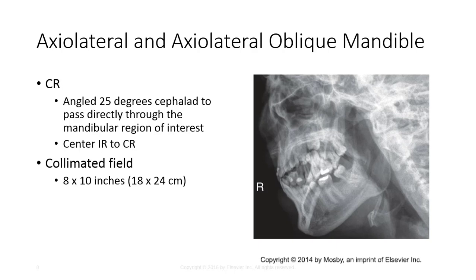The combination of tilt and tube angle should equal approximately 25 degrees. For example, if you tilt the head 10 degrees towards the IR, you would only need a 15 degree cephalic tube angle to present the anatomy appropriately. Center the IR to the CR and use a collimated field of 8 by 10 inches.